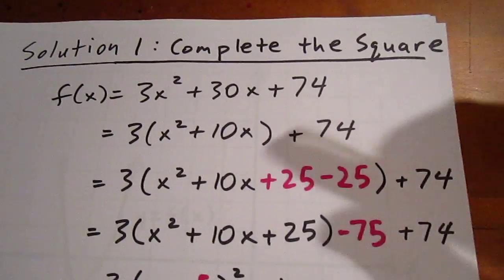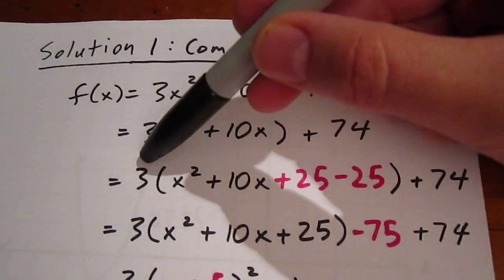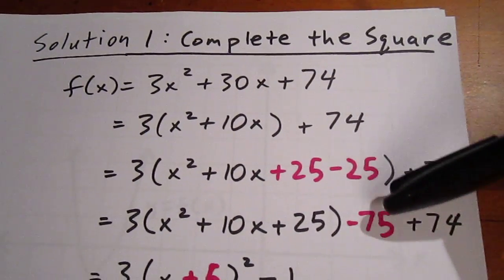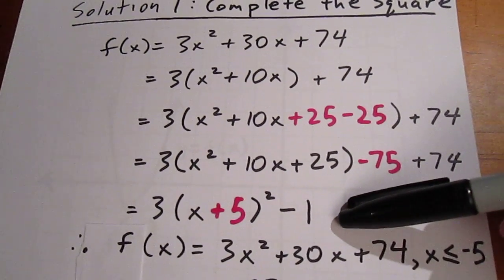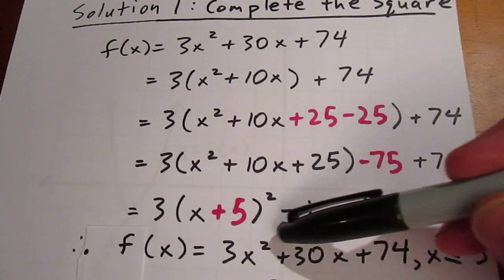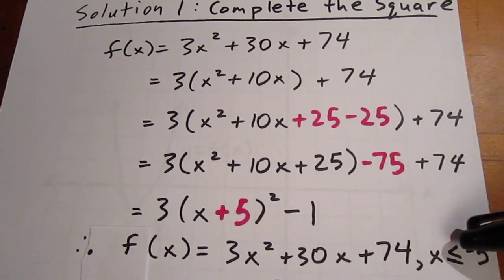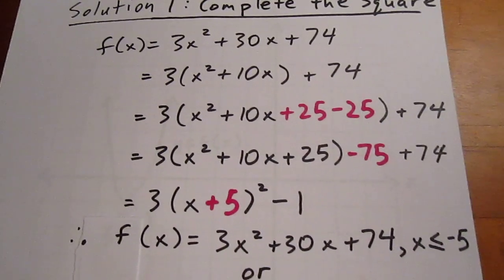Then in the next step, taking this 3, distributing it to the negative 25 to get negative 75, then collecting like terms, we can say that we have f(x) = 3x² + 30x + 74 where x ≤ -5.